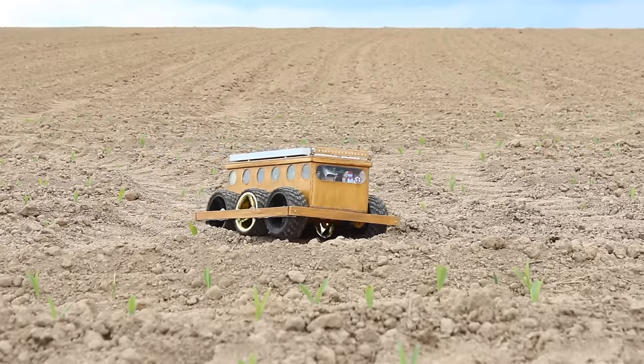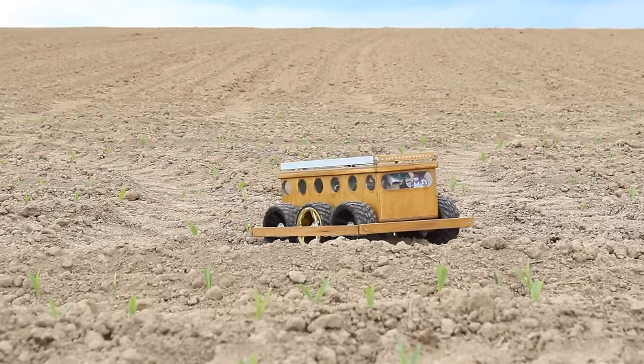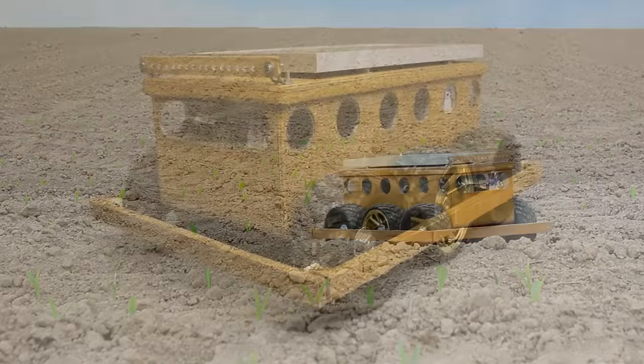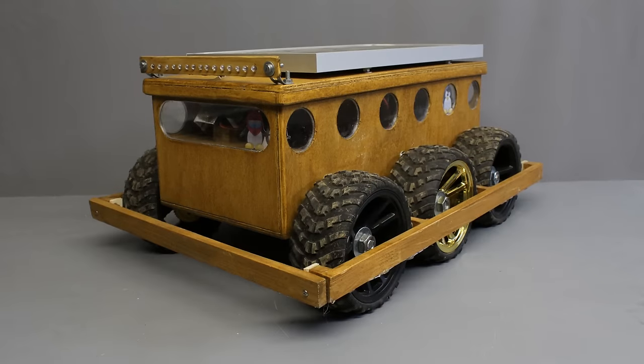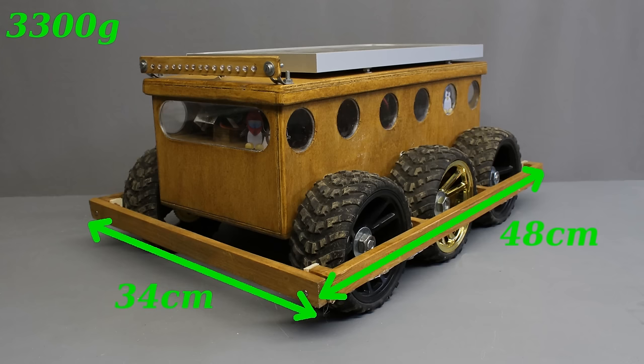R5 is my first rover for outdoor operations. The robot has a mass of 3300 grams and the dimensions are 34 by 48 by 23 centimeters.